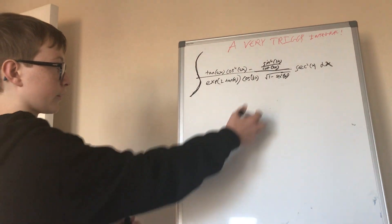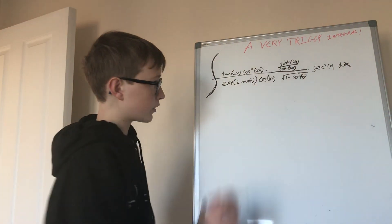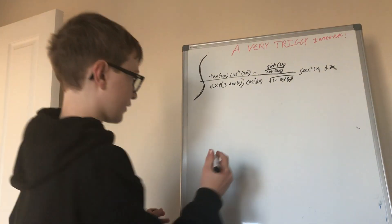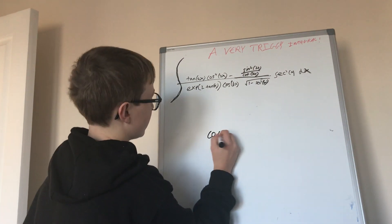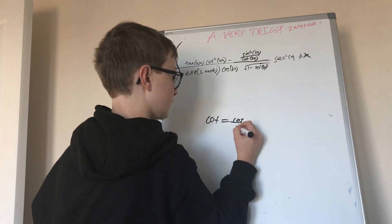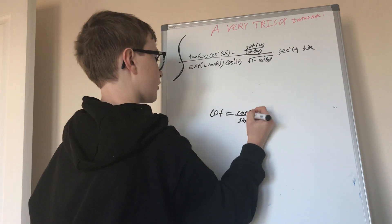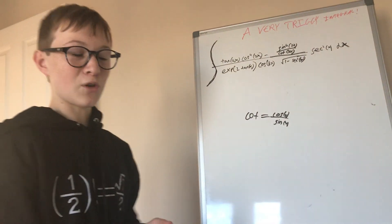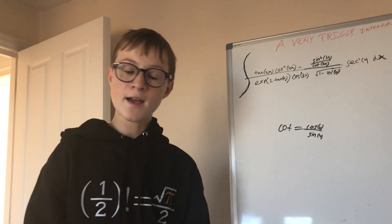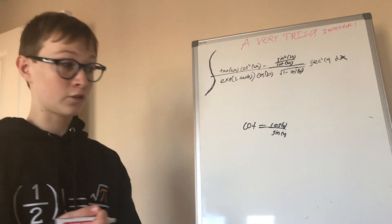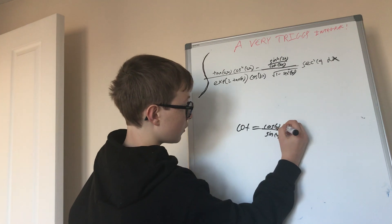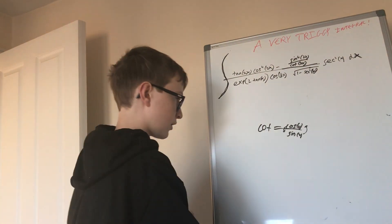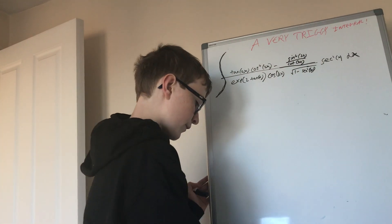The first thing we have to address is this ugly fraction here. Dividing by cotangent is the same as multiplying by tangent. Cotangent equals cosine over sine. When you divide by a fraction, say 2 over 3, that's the same as multiplying by the reciprocal — in that example, 3 over 2. In this example, sine over cosine, which is just tangent of the input, which in this case is 2x. So that's the first step.